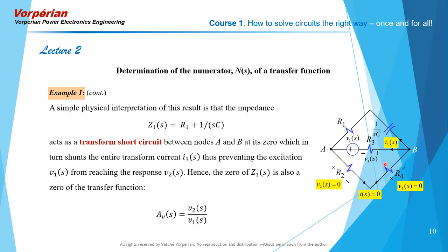This becomes a very simple physical interpretation of the transfer function V2 over V1 of s: there is an impedance across the response which has a zero, and that zero makes the impedance act like a transform short circuit directly connected across the response, siphoning all the current in the circuit and leaving nothing going into the response.